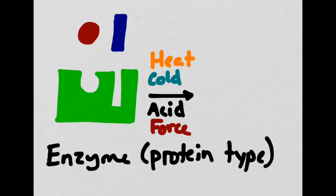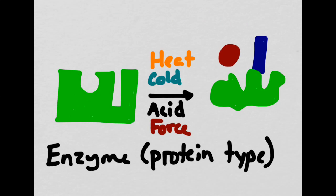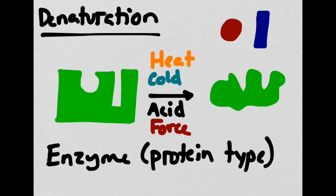If this enzyme or protein is subjected to any kind of heat, cold, acid, or force, it will change its shape. Now, even though this protein still has two openings, or activation sites, the substrates can no longer bind to it the way that they should. Remember also that we call this process denaturation.